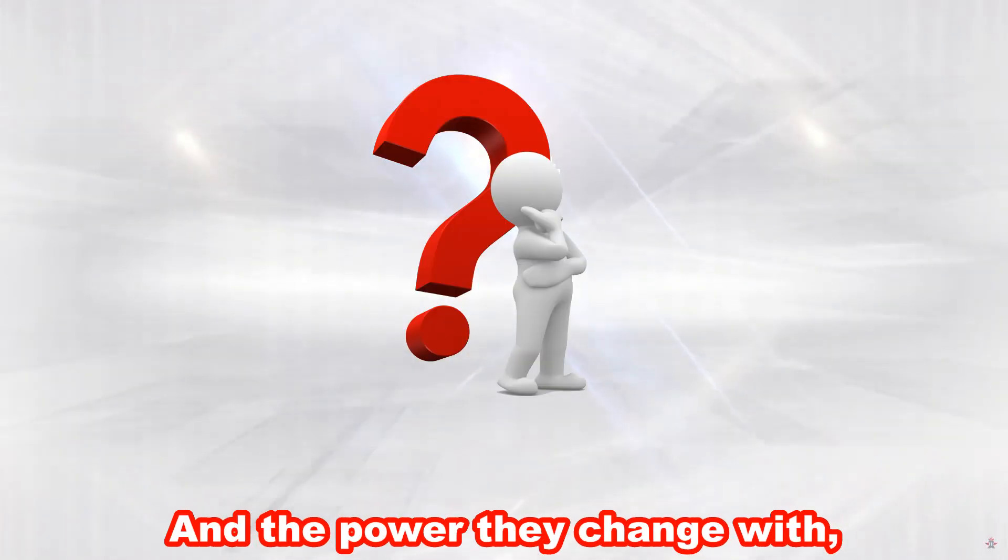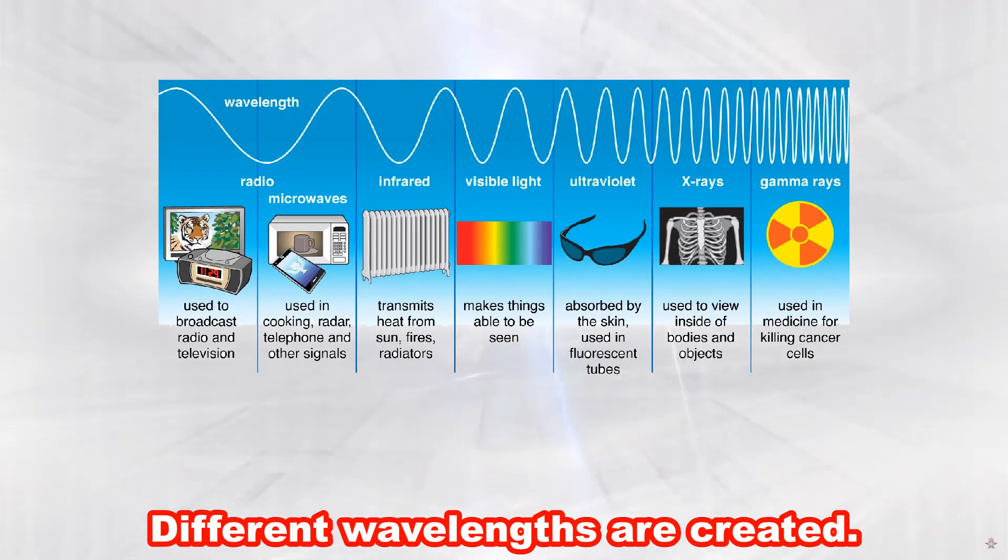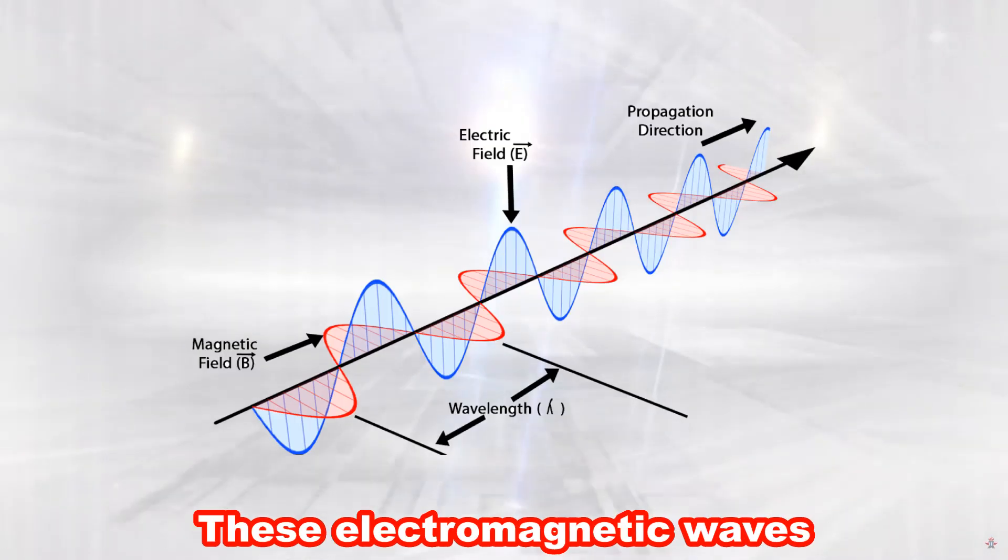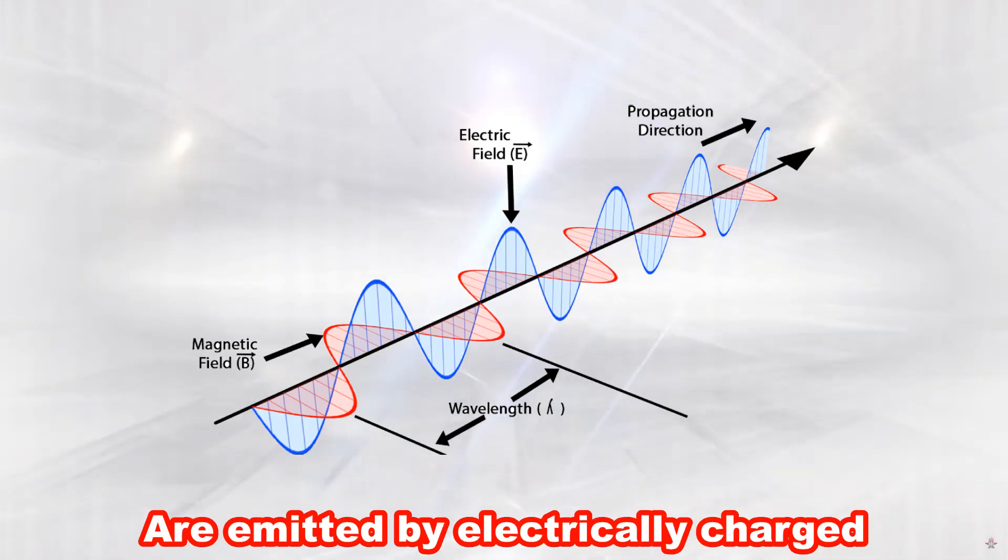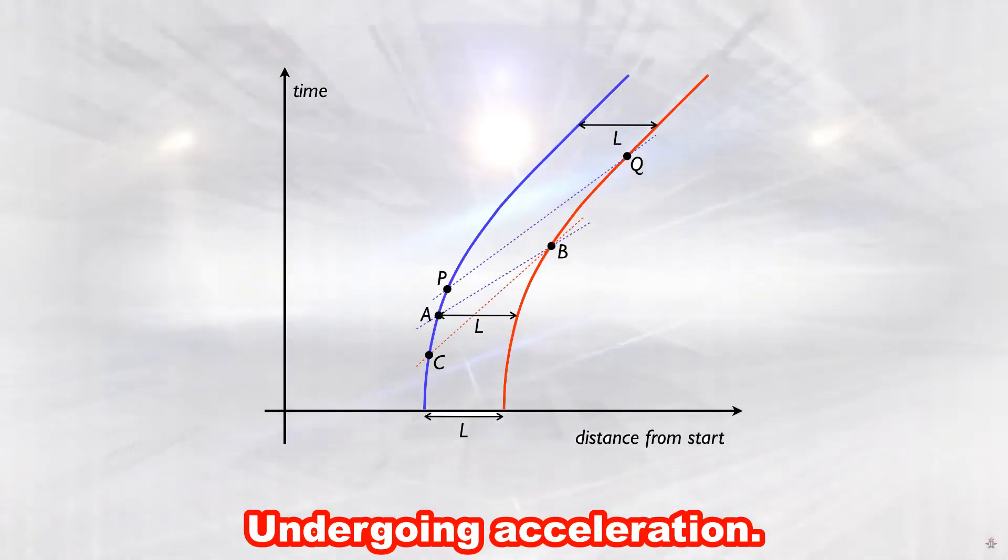Depending on how they change and the power they change with, different wavelengths are created. These electromagnetic waves are emitted by electrically charged particles undergoing acceleration.